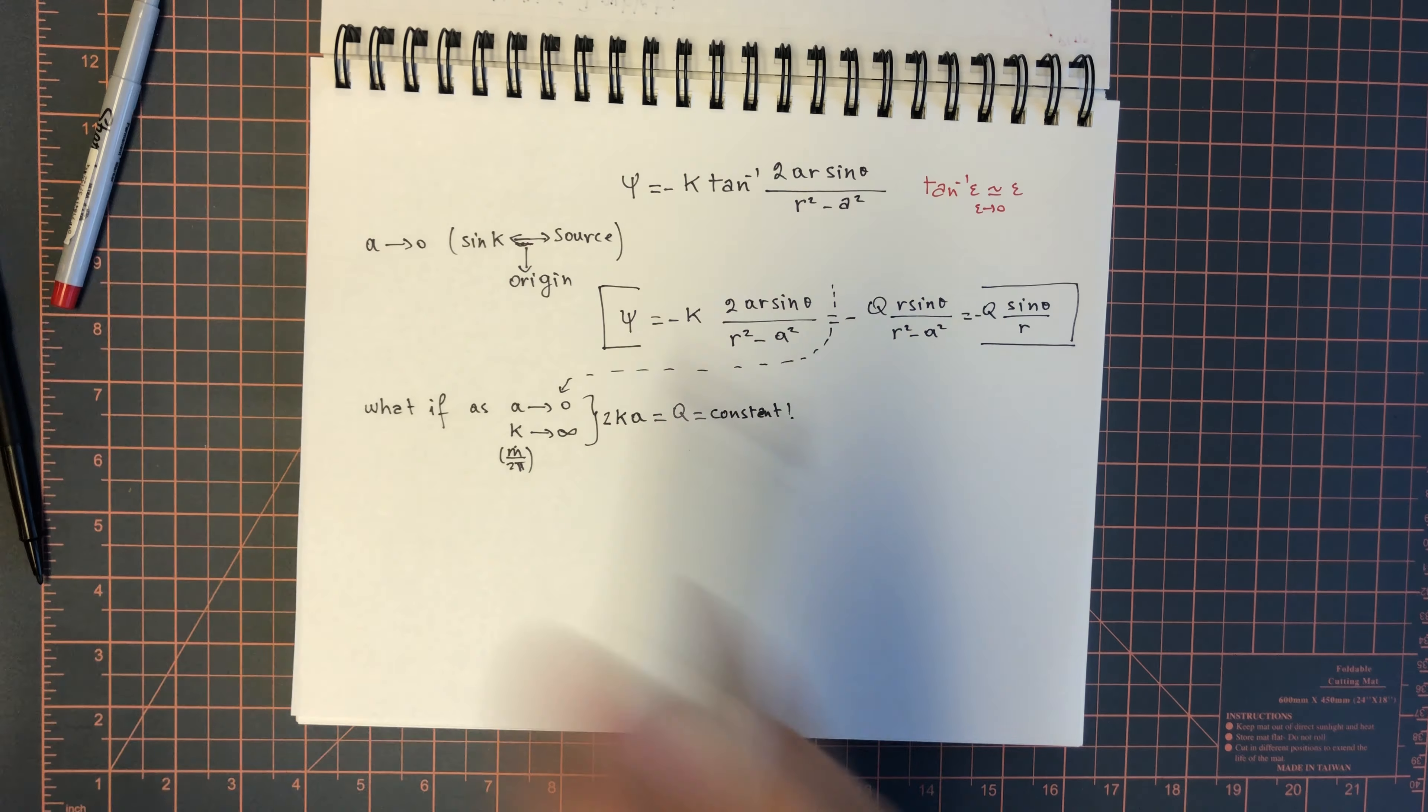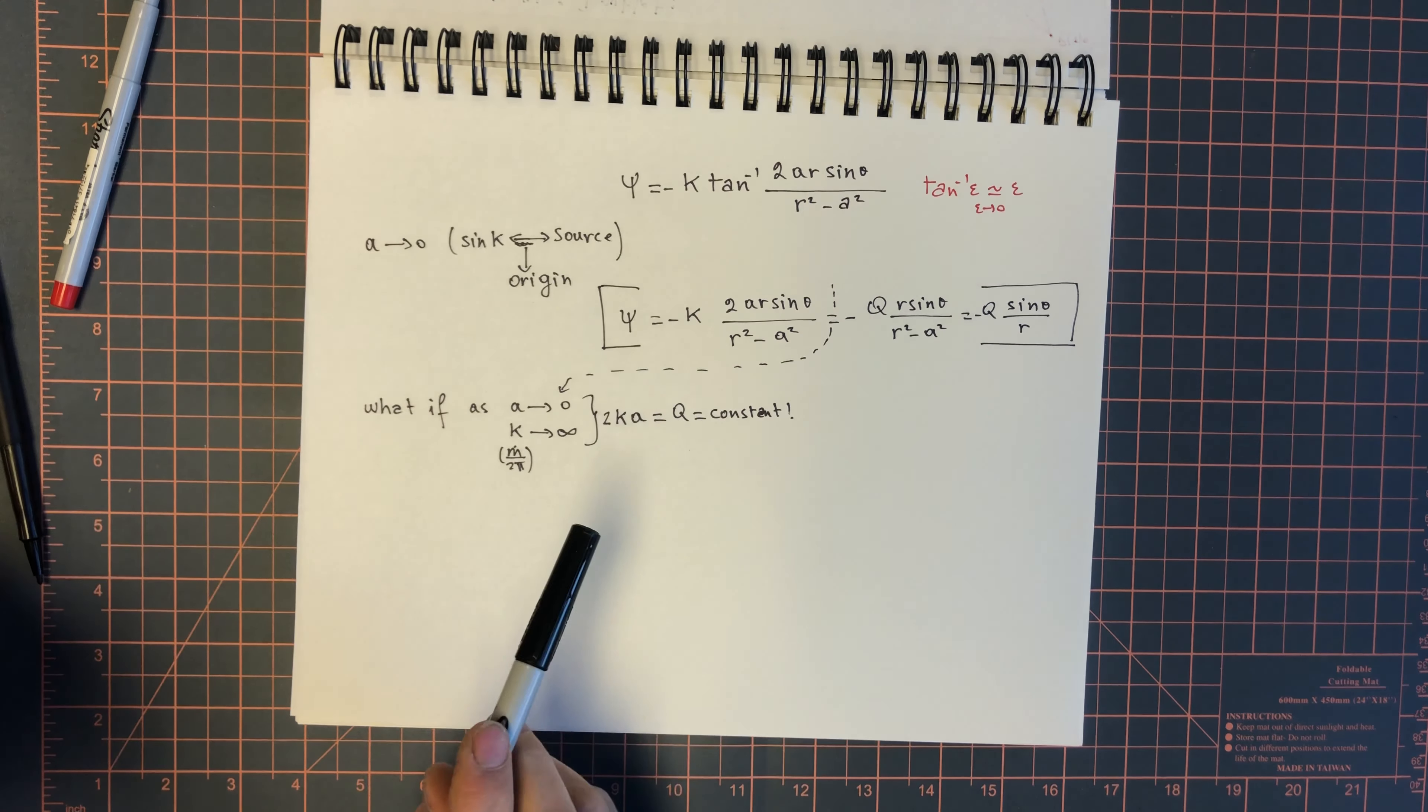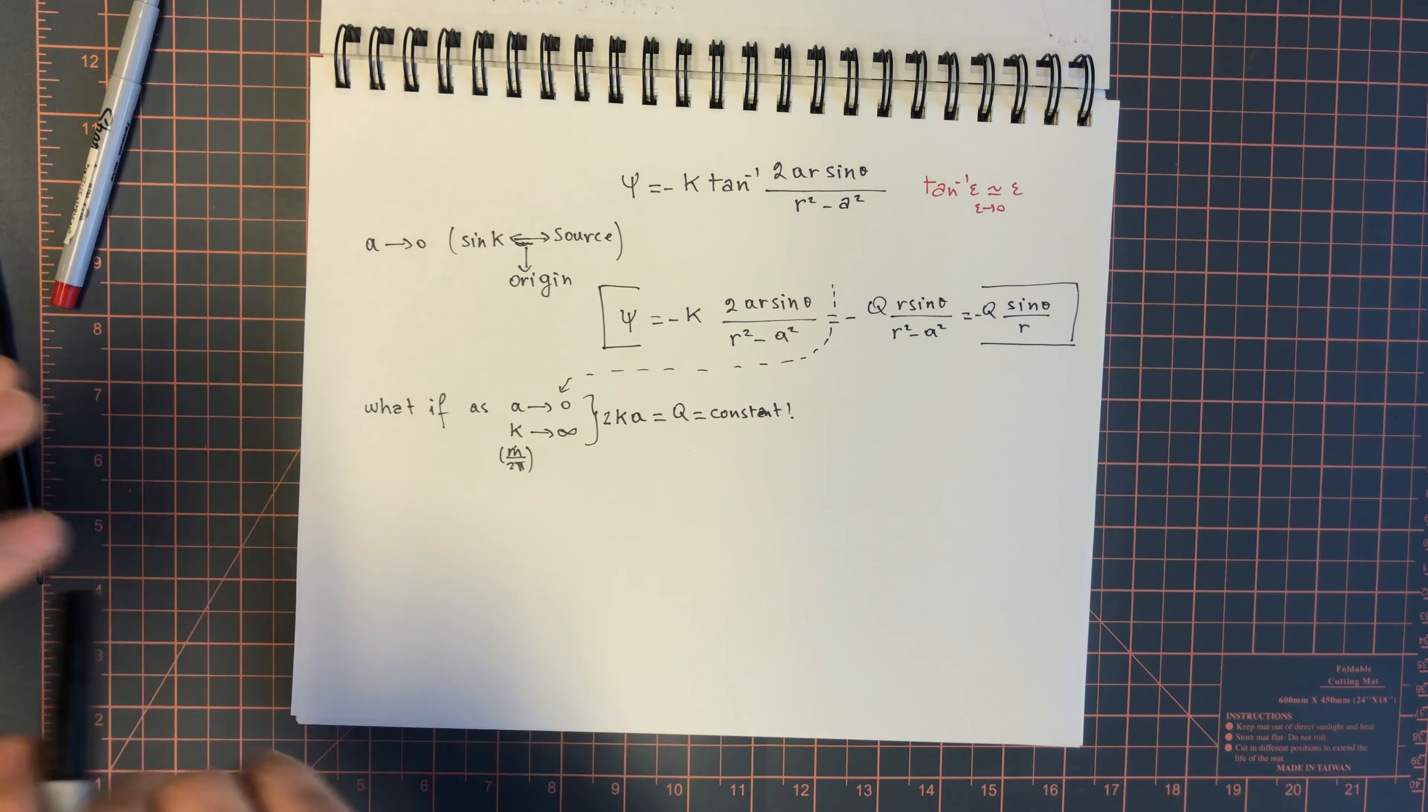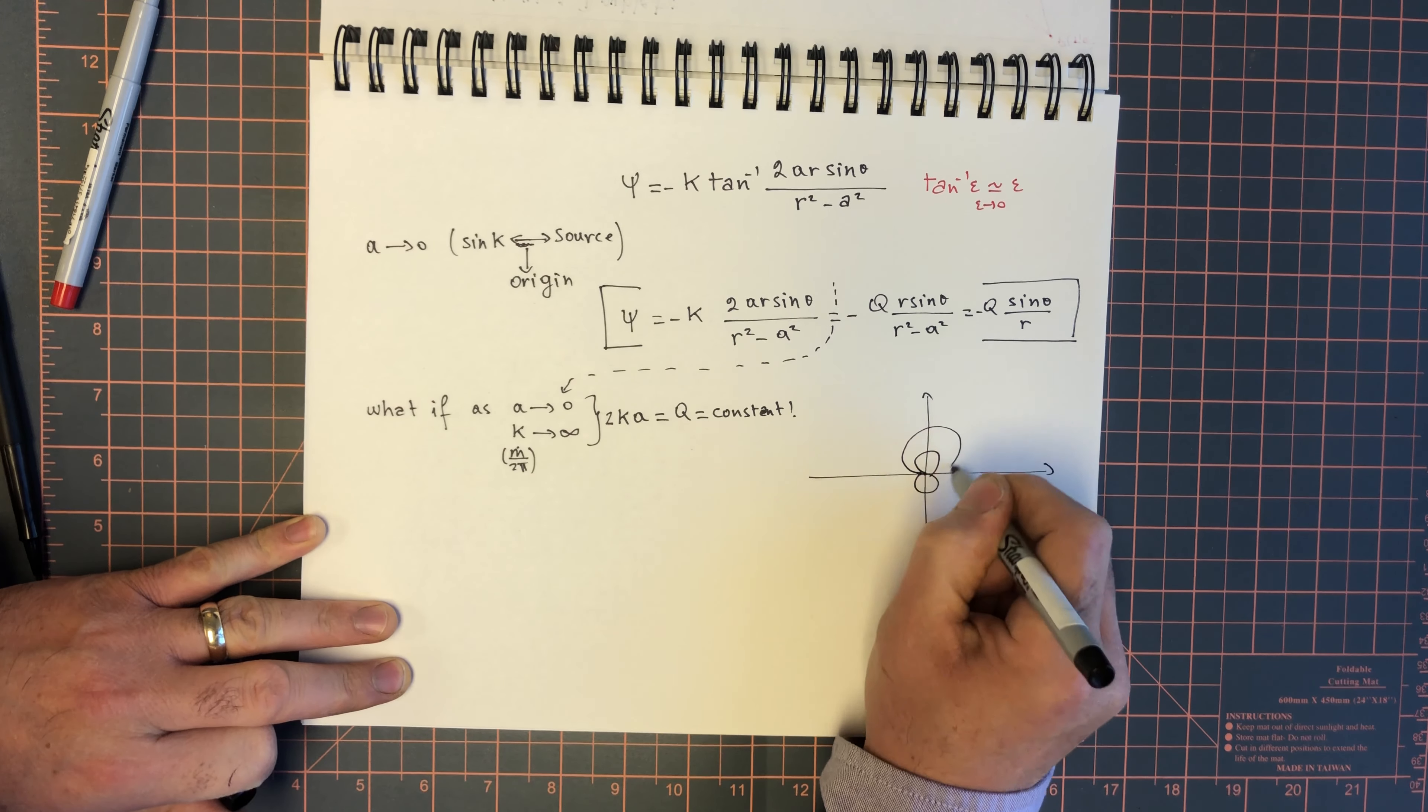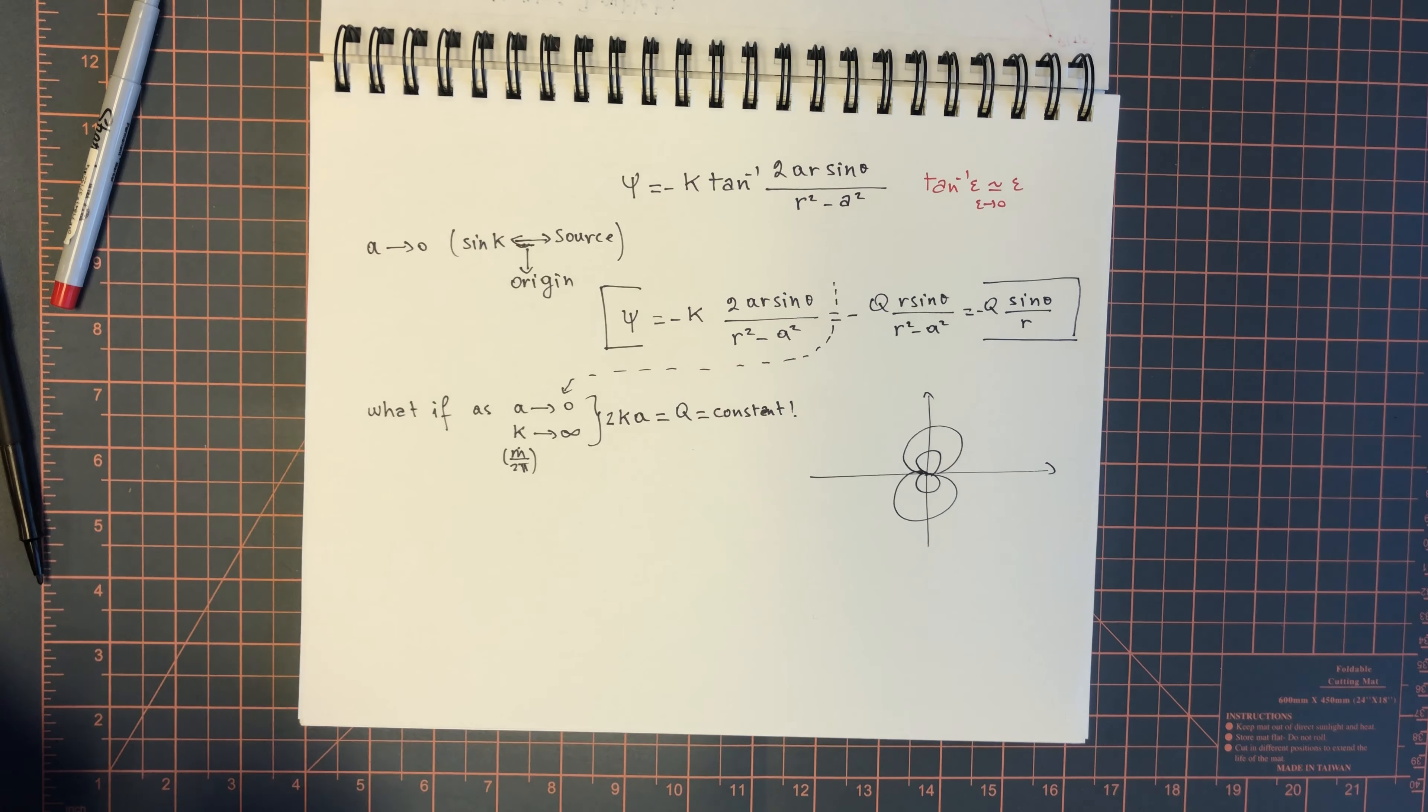The streamlines for the doublet look a little bit interesting. We'll plot them at some point. However, the idea here is that this doublet is going to actually help us do the flow over a cylinder, because it's just like a concentrated mass of fluid. When we add uniform flow, this is going to cluster together and give us what looks like a cylinder.